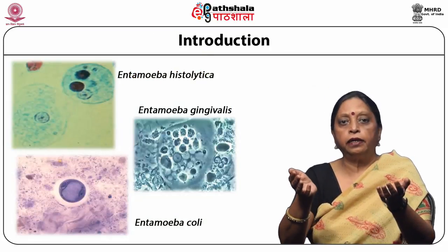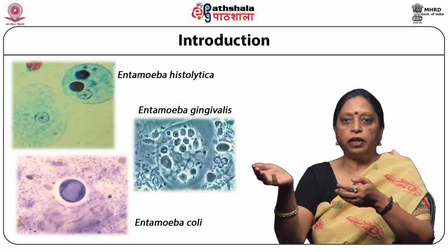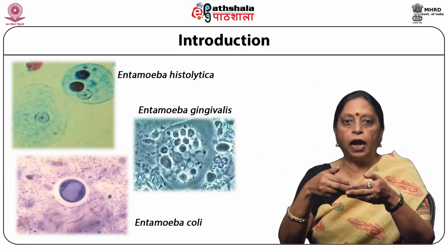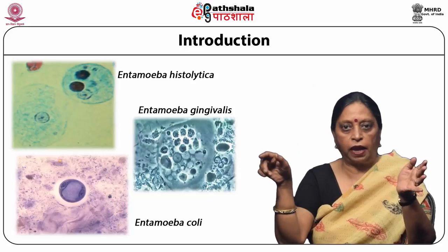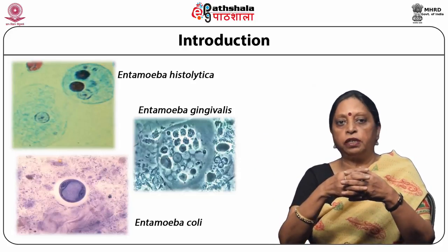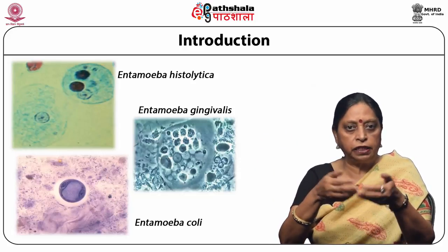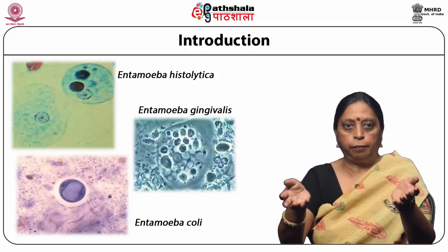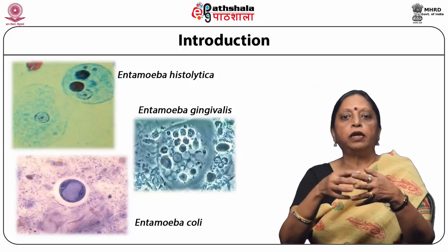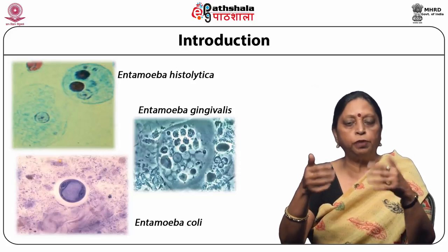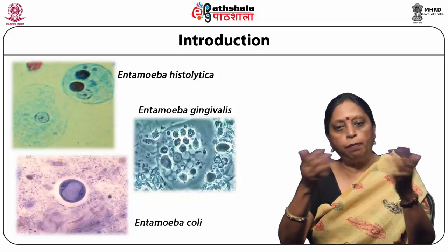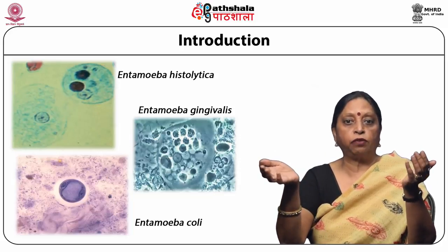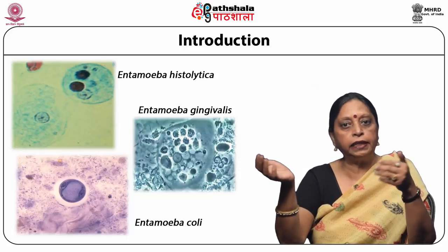There are different species of Entamoeba. Three of them are in the slide: Entamoeba histolytica, Entamoeba coli, and Entamoeba gingivalis. Some other species include Entamoeba dispar, Entamoeba hartmani, and Entamoeba polychae. Entamoeba is derived from the Greek word 'Entos', meaning 'from within', and 'Amoeba', meaning 'a change'. It was defined by Casagrandi and Babagallo in 1895.